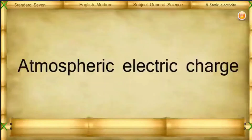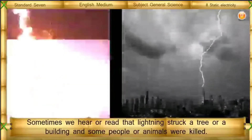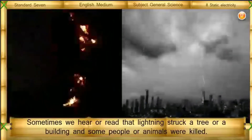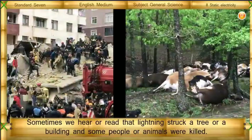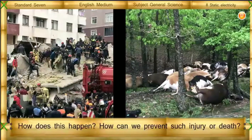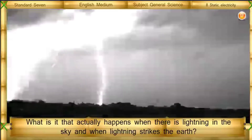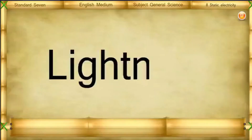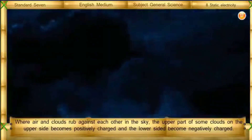Atmospheric electric charge: we have experienced clouds, thunder, and lightning. Sometimes lightning strikes a tree or a building and people or animals are killed. How does this happen? How can we prevent such injury or death? What actually happens when there is lightning in the sky and when lightning strikes the earth?